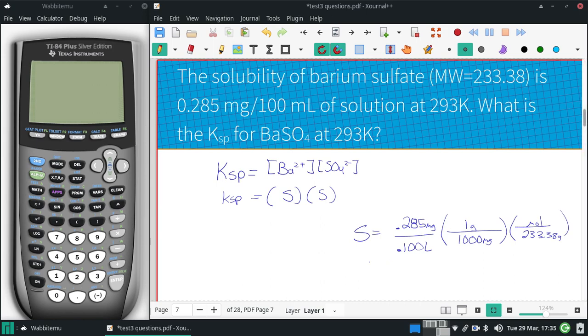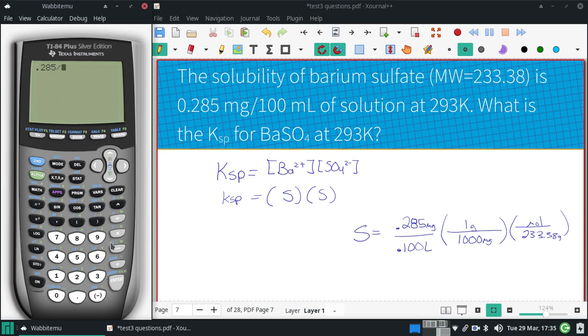Alright, if we plug all that in, we'll get our solubility. So 0.285 divided by 0.1, then we'll divide that by 1,000. And also divide it by the 233.38.